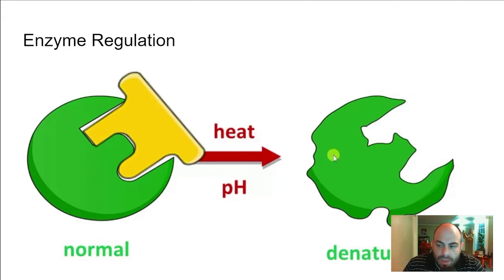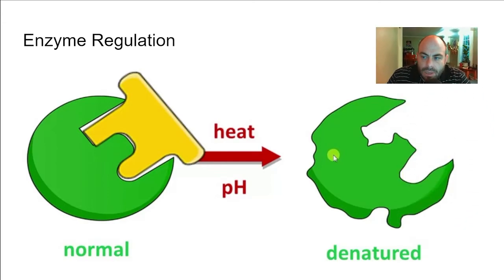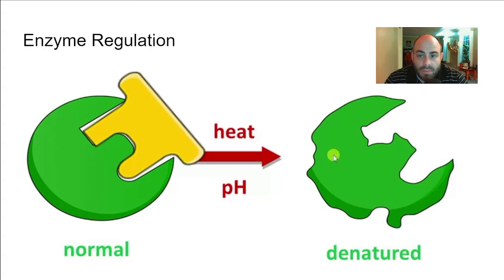You can see the enzyme-substrate complex where the substrate is able to bind because the shape of the enzyme determines its function — a perfect fit. But if you were to denature that protein through heat or pH (low or high), that would change the shape and the substrate would no longer be able to bind. This significantly slows down the reaction. This is essentially what happens when you're cooking — you change the shape of the protein and cause it to denature.